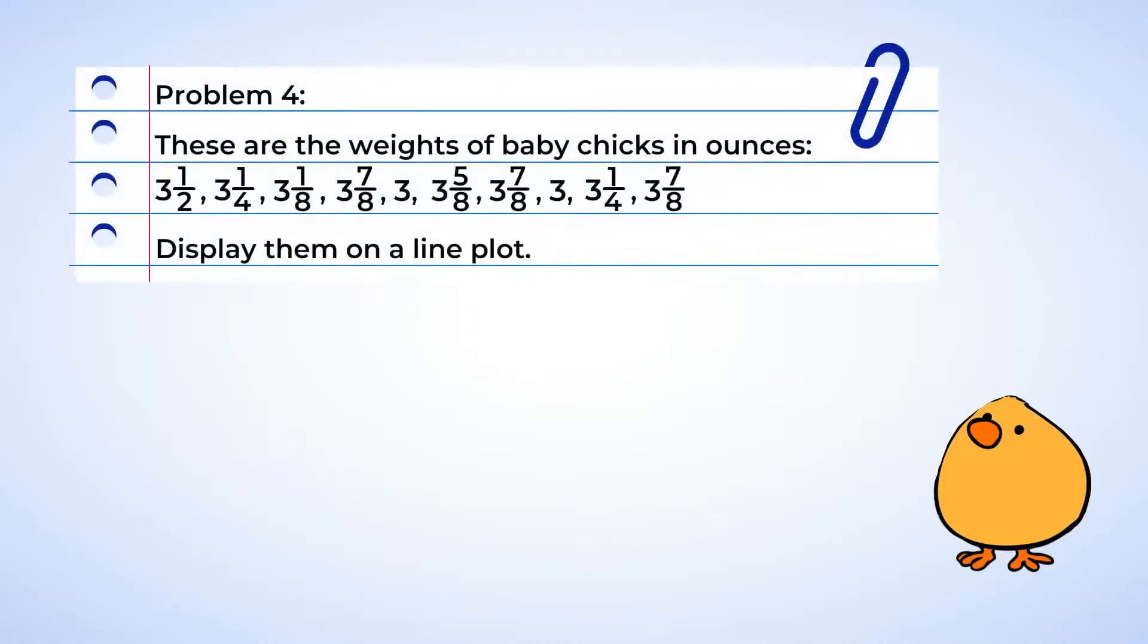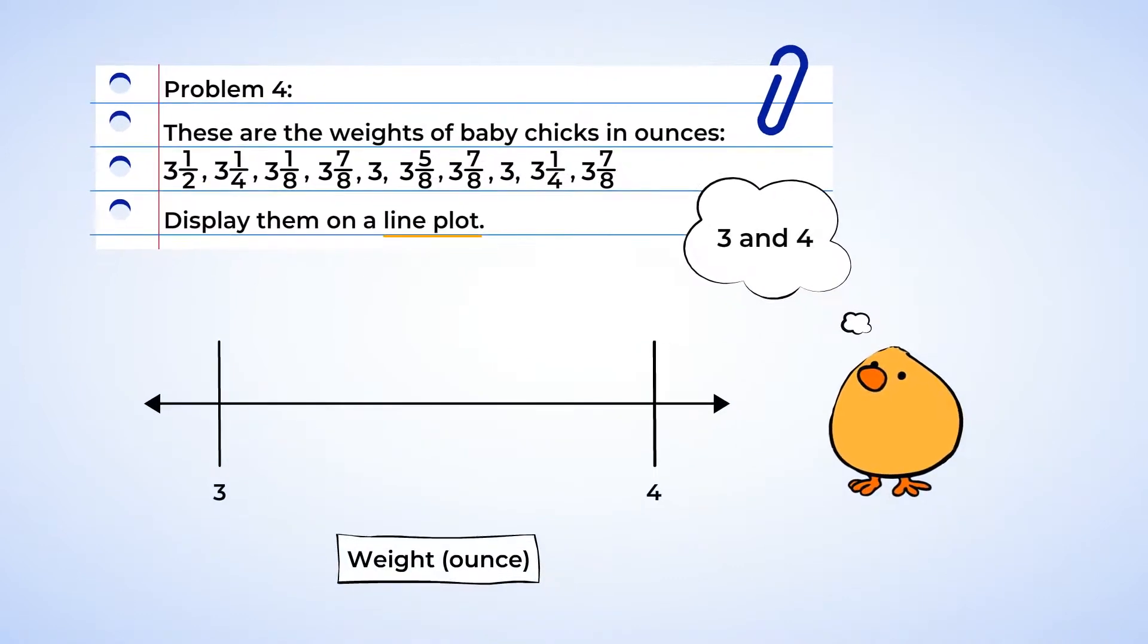Chicks are so cute. Fuzzy little yellow guys. Okay, we're given the weight of baby chicks in ounces, and we're asked to create a line plot. Looks like all of the numbers are between three and four, and I can see that the smallest fraction is an eighth. So let's create our line plot and divide it into eighths.